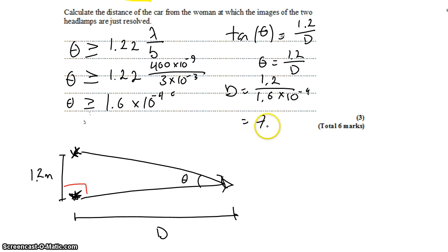Using the calculator, we get that d, then, is 7.4 times 10 to the third meters. So 7.4 kilometers away. There we go.